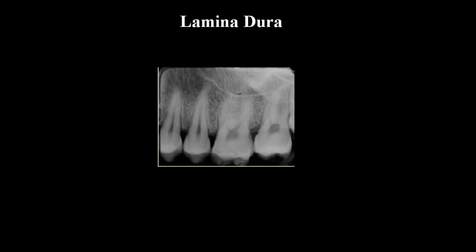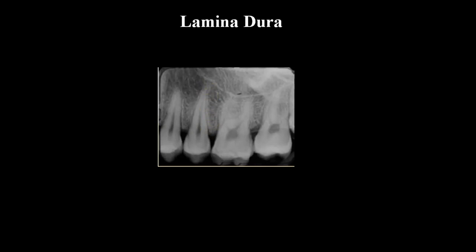Next is the lamina dura, which has significant clinical significance, especially in periodontitis and cystic conditions. Its other name is the hard layer, so called because of its radiographic appearance — a radiopaque outline extending from the alveolar crest around the periapex and continuing to the other side. Between this radiopaque outline and the dentin, you will see a radiolucent outline, which is the periodontal ligament space. The periodontal ligament space contains principal fibers and periodontal ligament fibers, which is why it appears as a radiolucent outline.